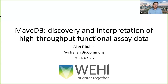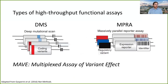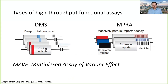Thank you so much. It's really great to be here with you today to tell you about MAVE-DB and the discovery and interpretation of high-throughput functional assay data. We're going to talk about high-throughput functional assays, and there are two main types that we're concerned with. Together these are all under an umbrella that we call multiplex assays of variant effect.